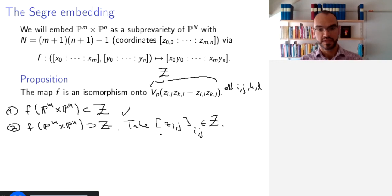So then, since we're in projective space, not all coordinates Z_IJ can be simultaneously zero. And so therefore there exists at least one that is non-zero. We may assume that it is the zero, zero coordinate. Otherwise, the argument is exactly analogous. And since it's not zero and we're in projective space, we can just assume that it is equal to one.